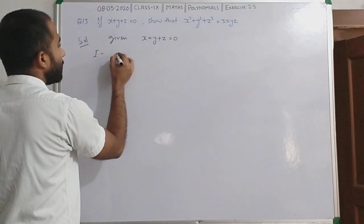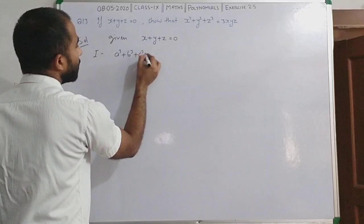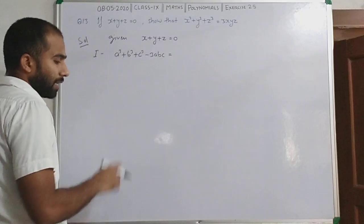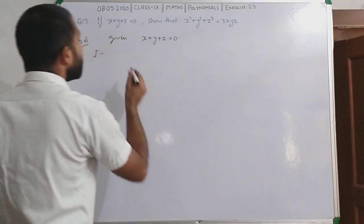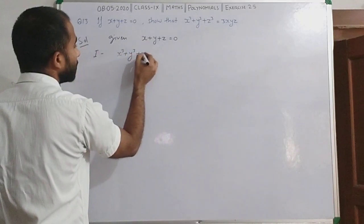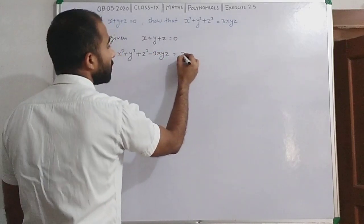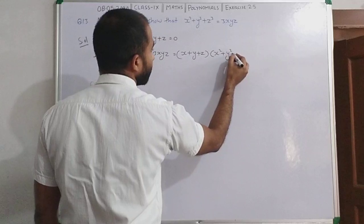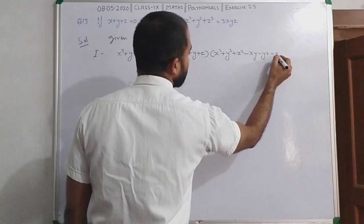Identity क्या है हमारी: a³ plus b³ plus c³ minus 3abc. इस identity को हम xyz variable की हिसाब से लिख लेते हैं: x³ plus y³ plus z³ minus 3xyz is equal to (x plus y plus z)(x² plus y² plus z² minus xy minus yz minus zx).